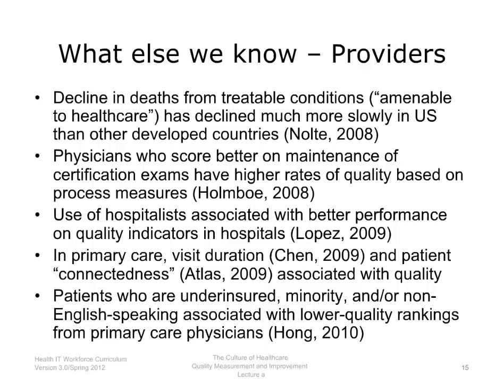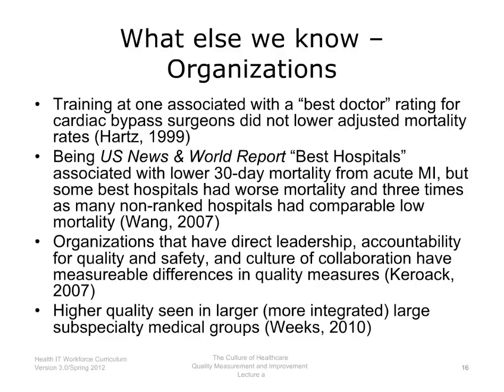Research about organizations has also illuminated the state of health care quality. Cardiac bypass surgeons trained at an organization associated with a 'best doctor' rating did not produce lower adjusted mortality rates. Being on the U.S. News and World Report best hospitals list was associated with lower 30-day mortality from acute MI, but some best hospitals had worse mortality, and three times as many non-ranked hospitals had comparable low mortality. Organizations with direct leadership accountability for quality and safety and a culture of collaboration have measurable differences in quality measures. Higher quality has also been seen in larger, more integrated, large subspecialty medical groups.